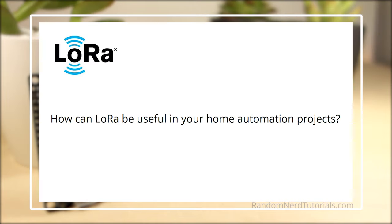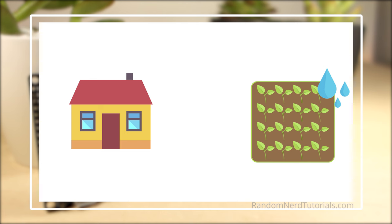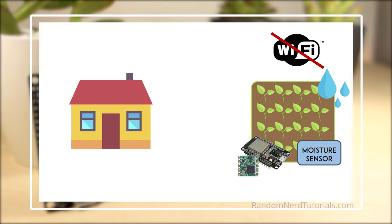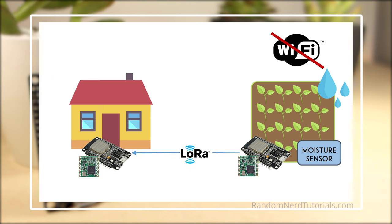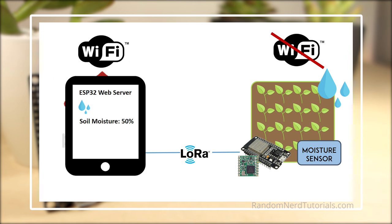How can LoRa be useful in your home automation projects? Let's take a look at a practical application. Imagine that you want to measure the moisture in your field. Although it's not far from your house, it probably doesn't have Wi-Fi coverage. So you can build a sensor node with an ESP32 and a moisture sensor that sends the moisture readings once or twice a day to another ESP32 using LoRa. This ESP32 has access to Wi-Fi and it can run a web server that displays the moisture readings. This illustrates how you can use LoRa technology in your ESP32 projects.